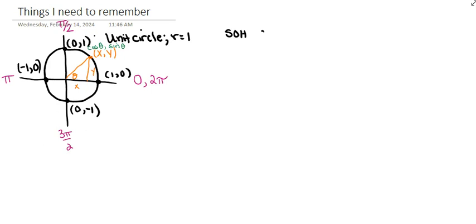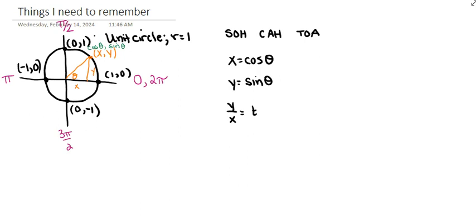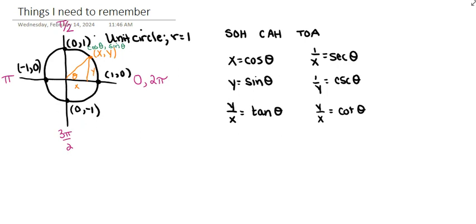I'm gonna remind you SOH CAH TOA. Sine is the ratio between the opposite side and the hypotenuse. Cosine is the ratio between the adjacent side and the hypotenuse. Tangent is the ratio between the opposite and adjacent sides. In the unit circle, x represents the cosine of our angle, y represents the sine of our angle, y over x represents the tangent, 1 over x is the secant, 1 over y is the cosecant, and x over y is the cotangent. That's all review, but super nice to have it all in one spot on a separate sheet of paper.